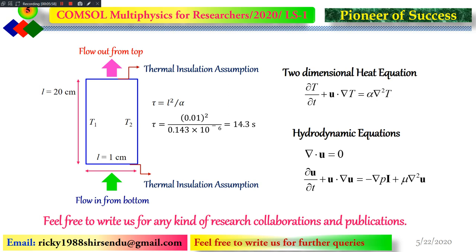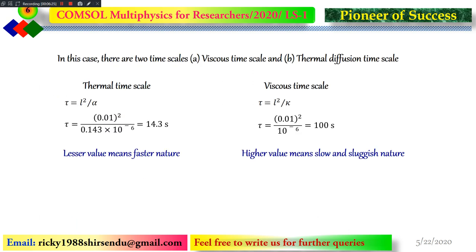For the channel dimensions we take 1 centimeter width and 20 centimeter height. With these parameters the thermal time scale comes to about 14.3 seconds. There are two time scales in this problem: one associated with thermal diffusion and another which is the viscous time scale due to flow. The thermal time scale is 14.3 seconds while the viscous time scale is 100 seconds.